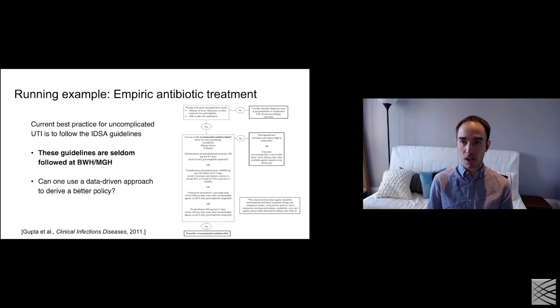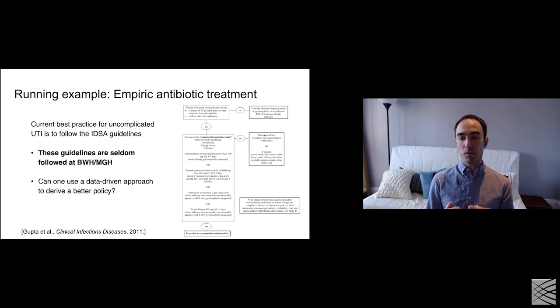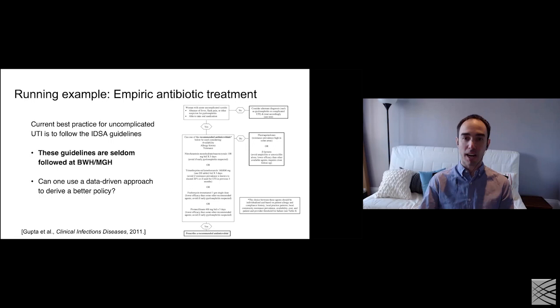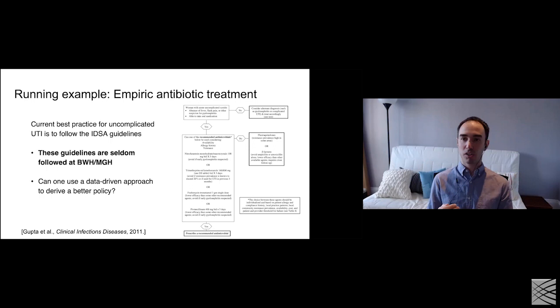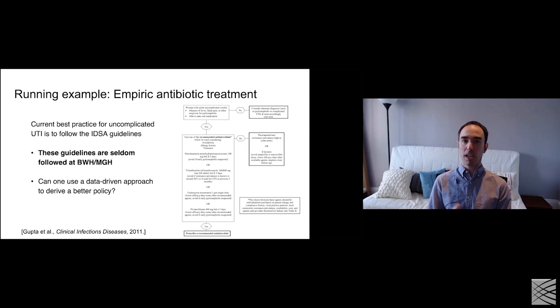There could be a number of reasons why guidelines are seldom followed: lack of clinical decision support, the guidelines not being well designed for this particular population, or the guidelines not reaching the right risk-benefit trade-off that clinicians are looking for. What we'll be looking at is how one can learn guidelines from scratch using local data from Brigham Women's Hospital and MGH, and in doing so also provide a knob for that risk-benefit trade-off.